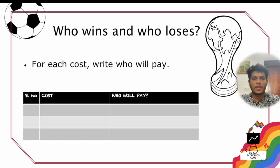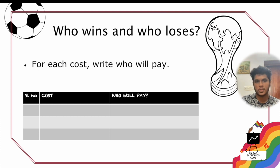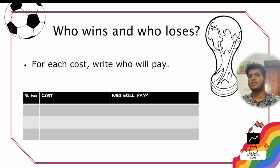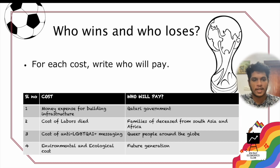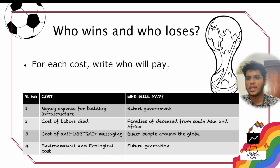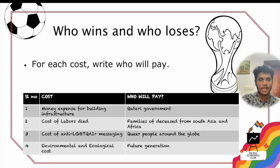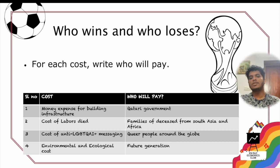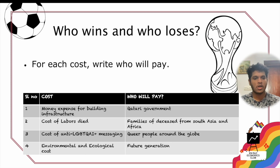Cambridge Economics Club is giving you some idea of how to perform the task, showing you what we identified as costs and benefits — these slides are added to the main slides to show you how to perform it in practice. Identifying from the Qatar World Cup: the first cost is the money expense for building such infrastructure — the money expenditure by the Qatari government, so the Qatari government is identified as who pays. The second cost is the cost of laborers' deaths — the cost of human lives lost — where families of deceased workers from South Asian countries and Africa are the ones paying the cost.